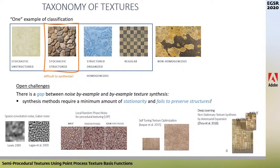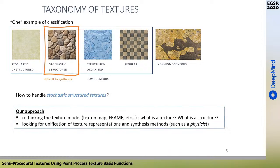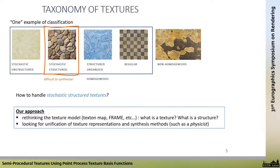All methods fail at synthesizing them because they require stationarity and fail to preserve structures — sparse convolution noise, local random phase noise, self-tuning, texture optimization, and deep learning such as adversarial expansion. So how to handle them? Our approach is rethinking the texture model: what is a texture, what is a structure, and looking for a unification of texture representations and synthesis methods.